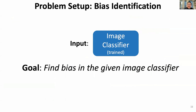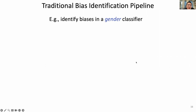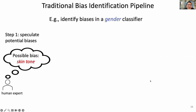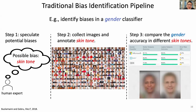Let's look at the problem setup. We are given an image classifier that has already been trained for a certain task, such as object recognition. The goal is to find the bias in this given image classifier. Let's review a traditional pipeline for identifying the hidden biases of an image classifier. Suppose we want to identify biases in a gender classifier — it usually contains a few steps. The first step is to have human experts speculate potential biases, for example, skin tone. Then you collect and annotate images with different skin tone types. The third step is to test the gender classifier on images with different skin tones and measure performance. If there is a large gap between groups, you say there is a bias that needs to be mitigated.